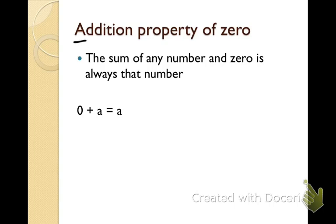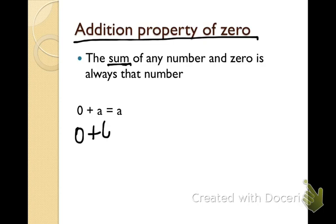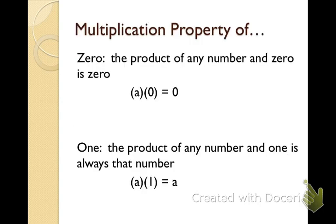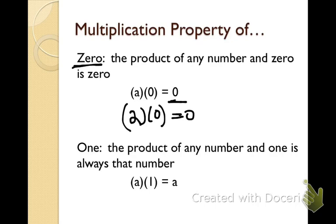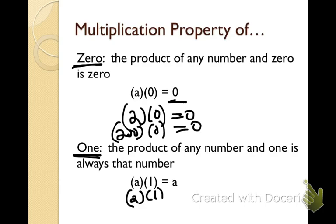We're going to look at another property: the addition property of zero. The sum of any number and zero is always that number — so 0 + a = a, and 0 + 6 = 6. The multiplication property of zero is different: the product of any number and zero is always zero, so 2 × 0 = 0, and 200 × 0 = 0. But the multiplication property of one states that the product of any number and one is always that number: a × 1 = a, 2 × 1 = 2, and 200 × 1 = 200.